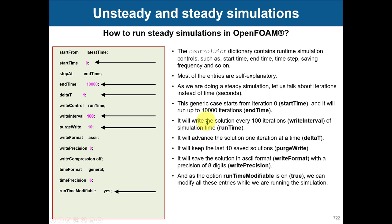In controlDict for steady simulations, you control the end time — typically set to 10,000 iterations. You put Delta T to one, which will just represent the iteration number. This does not have any link to actual time, because there is no actual time in steady simulations.